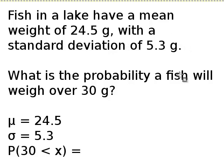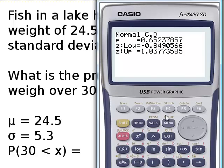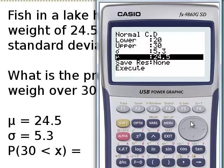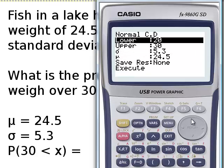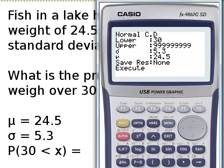But it's the probability of a fish weighing over 30 grams. So now, our lower bound is 30 grams.